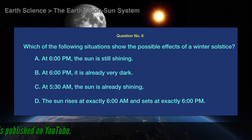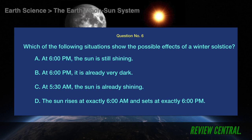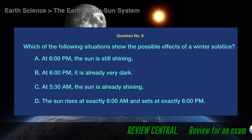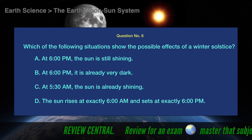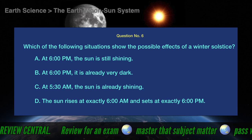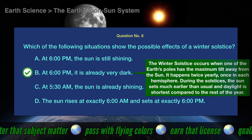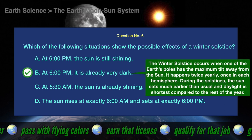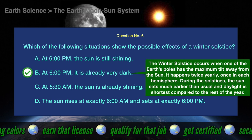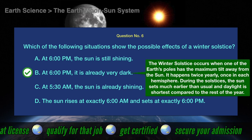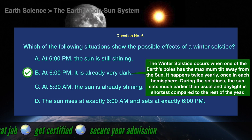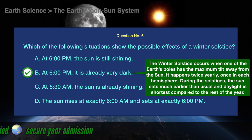Question number 6. Which of the following situations shows the possible effects of a winter solstice? The correct answer is B: at 6 p.m., it is already very dark. The winter solstice happens twice yearly, once in each hemisphere. During the solstices, the Sun sets much earlier than usual and daylight is shortest compared to the rest of the year.